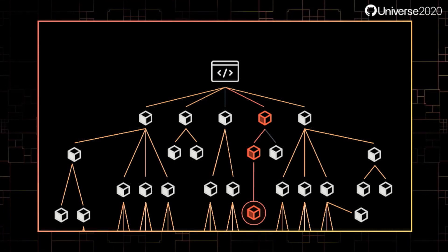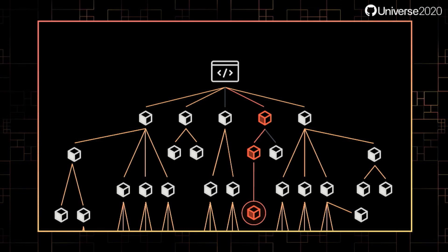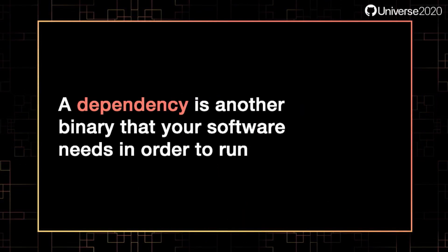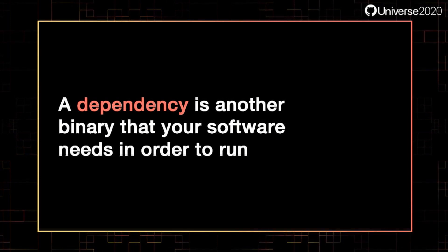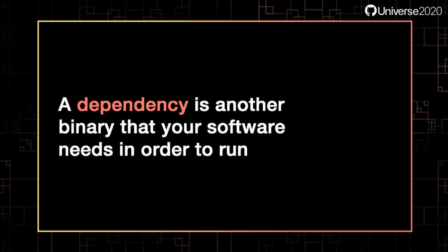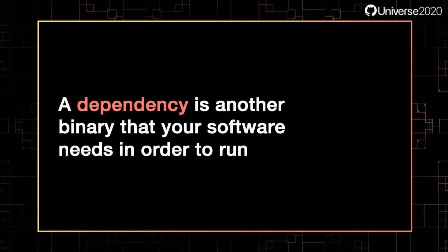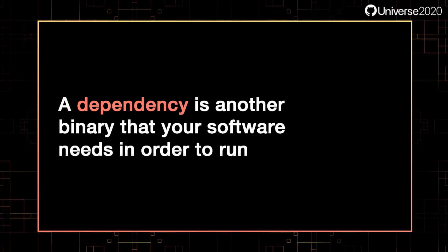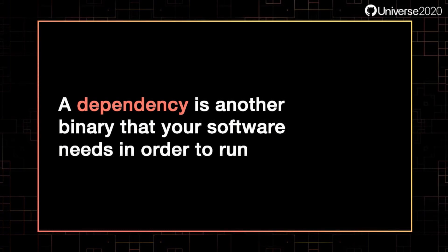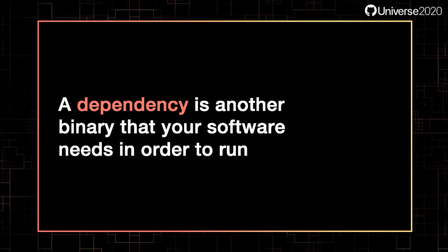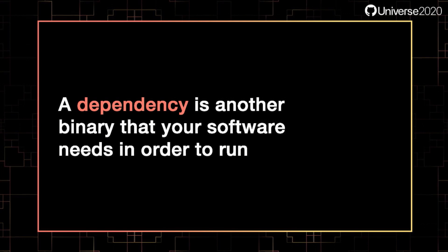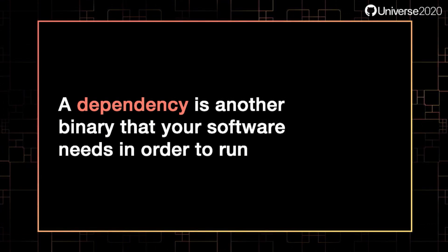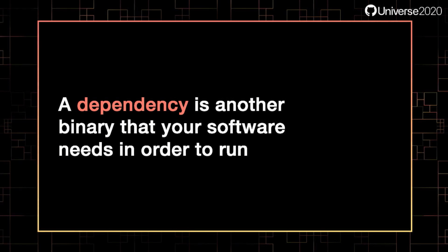Your software supply chain depends on your dependencies, as well as properties of your dependencies. A dependency is another binary that your software needs in order to run. This can include both binaries required when building the application, often called dev dependencies, as well as binaries that are actually used at runtime. A dependency enters your environment when a developer specifies it in a manifest file, where dependencies are declared, or a lock file, where particular versions of dependencies are specified.